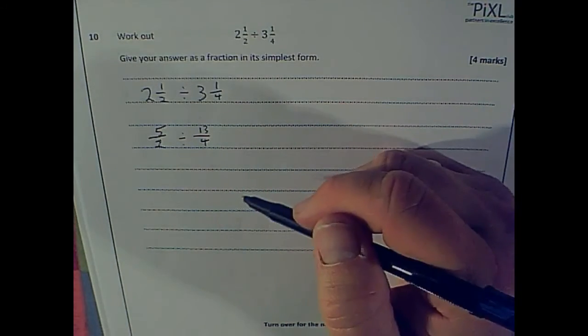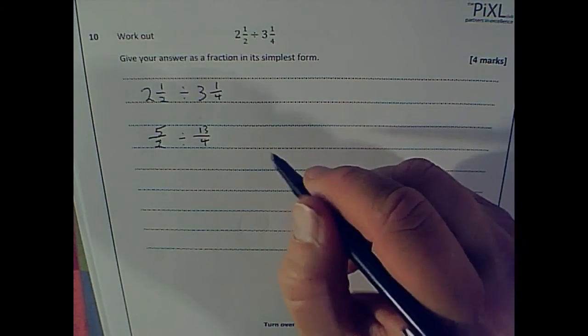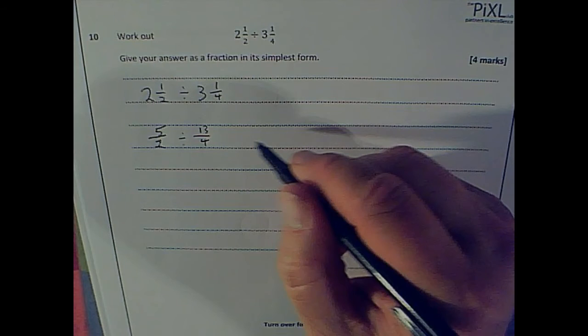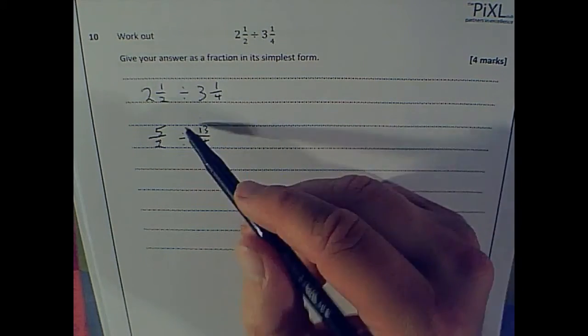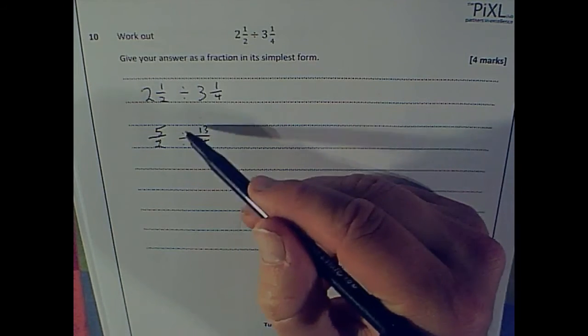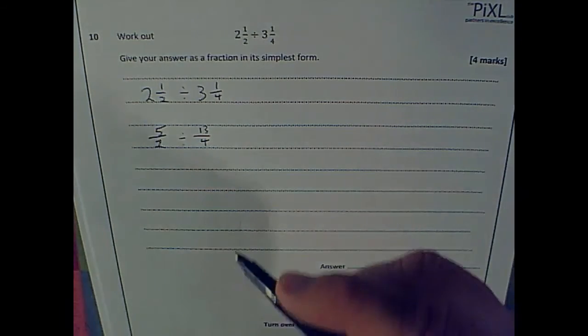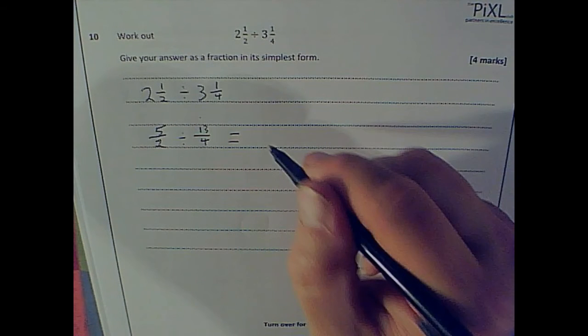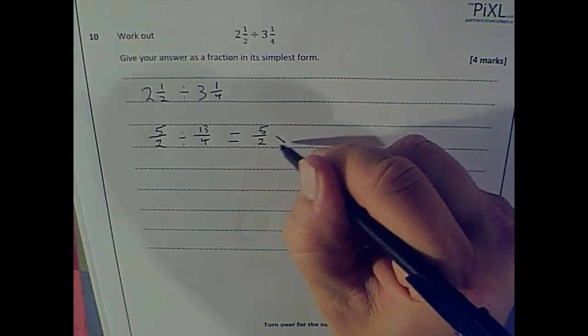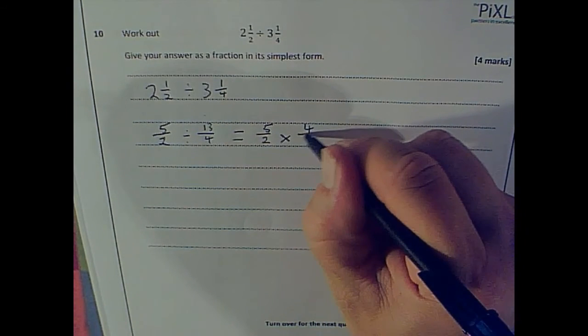So once I've got this bit, I just need to remember that when I'm dividing fractions, I can use the multiplicative inverse, which is where I turn this one upside down and turn it into a multiplication. So that is the same as five over two times by four over 13.